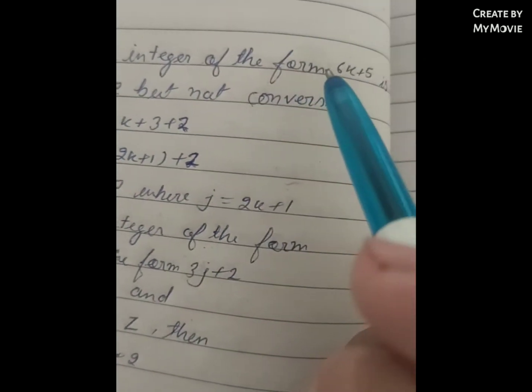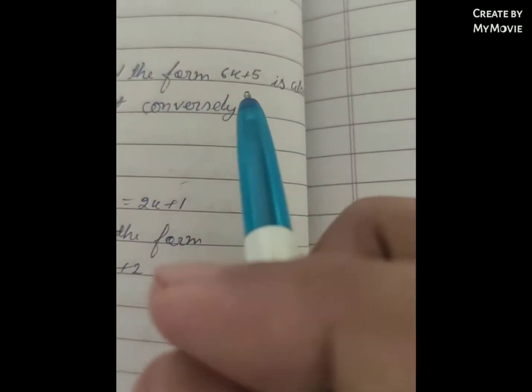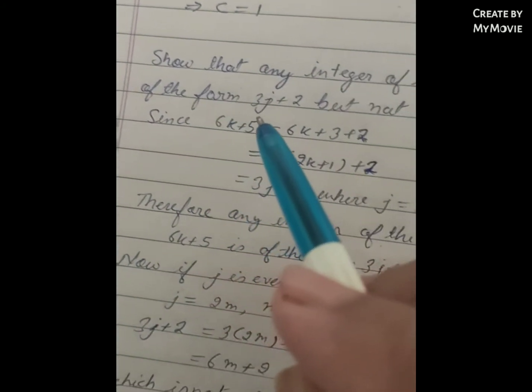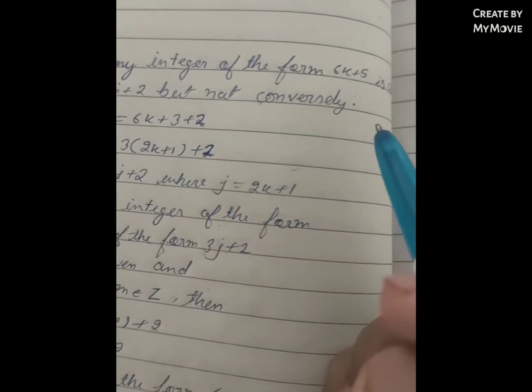Show that any integer of the form 6k plus 5 is also of the form 3j plus 2, but not conversely.